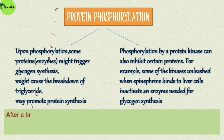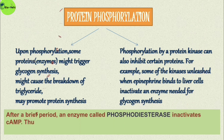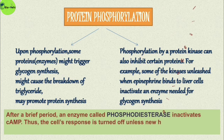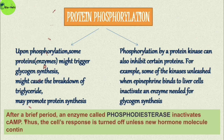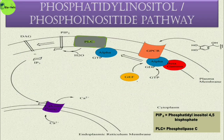After a certain period of time, an enzyme called phosphodiesterase inactivates cyclic AMP, thus turning off the cell's response — unless new hormone molecules continue to bind to their specific receptors in the plasma membrane.